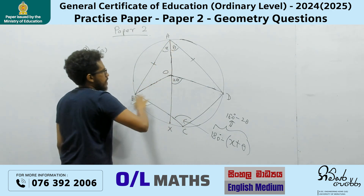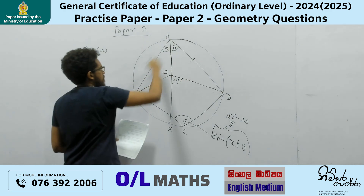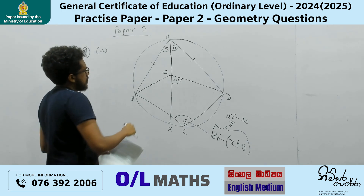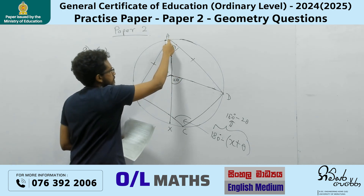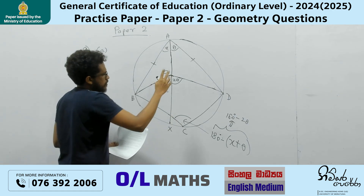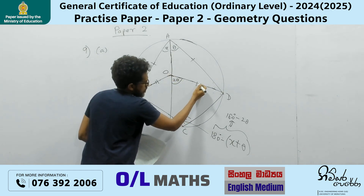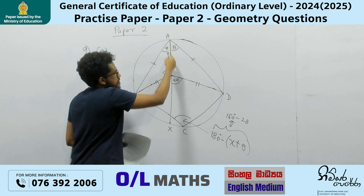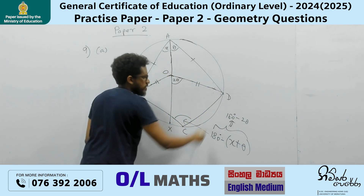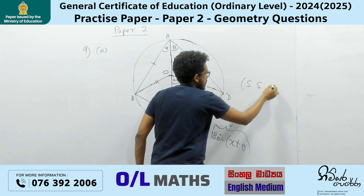Looking at the diagram, we have AB equals AD. If you watch closely, you can see this is a radius, so BO equals OD. This is a common side. Then triangles BAO and AOD are two congruent triangles. The condition is side-side-side.